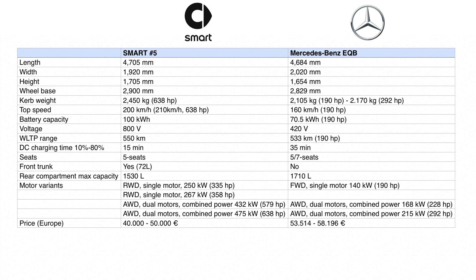WLTP electric range is 550 kilometers for the Smart #5 and 533 kilometers for the Mercedes EQB, so they are very similar from a range point of view. The DC fast charging time from 10% to 80% is 15 minutes for the Smart #5 and 35 minutes for the Mercedes EQB — a big difference that can be important for drivers who often take long-distance trips.